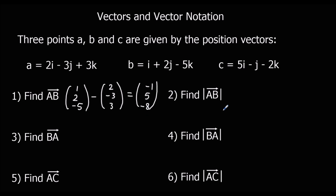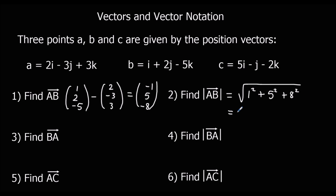Find the modulus of a to b — the distance between those two points — we use Pythagoras. So we're going to have 1 squared plus 5 squared plus 8 squared, all square rooted. 1 plus 25 plus 64 gives us 90, so that gives me 3 root 10.